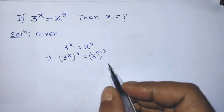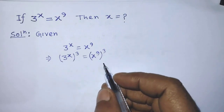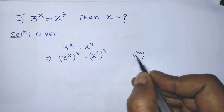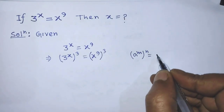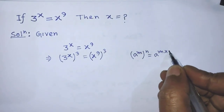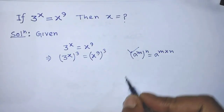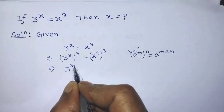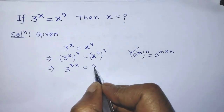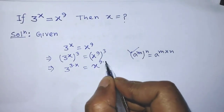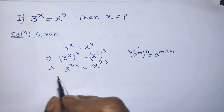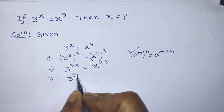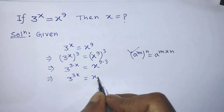To simplify the left hand side and right hand side, we have to apply the formula: a to the power m, whole to the power n, is equal to a to the power m times n. According to this formula, we can write 3 to the power 3 times x is equal to x to the power 9 times 3, which gives us 3 to the power 3x is equal to x to the power 27.